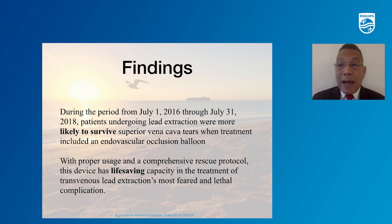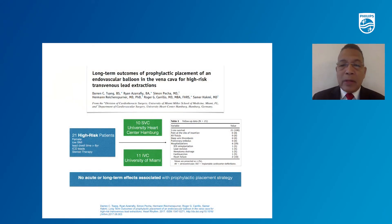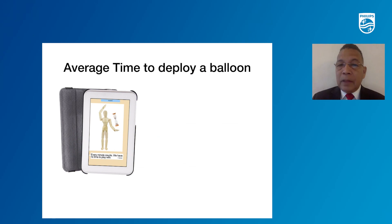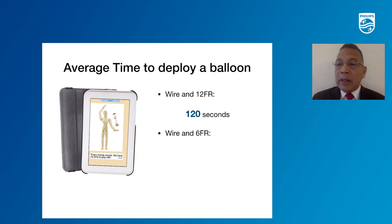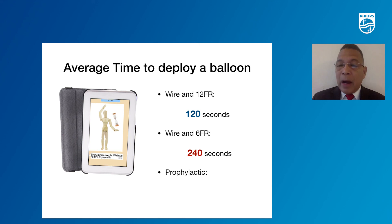We also looked at the prophylactic use of the balloon in two centers — one in the United States and another in Hamburg — and we did not see any deleterious effect of prophylactic balloon use on patients undergoing extraction, followed for a period of six months. To summarize deployment times: with a wire and 12-French sheath, a competent extractor deploys the balloon in 120 seconds; with a wire and 6-French sheath, in 240 seconds; but with a prophylactic balloon already in place, deployment takes only 14 seconds.